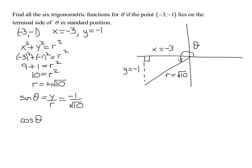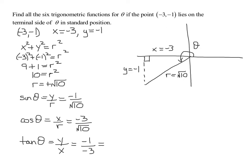Cosine of theta is x over r. X was negative 3, so it's negative 3 over the square root of 10. Tangent of theta is y over x: negative 1 over negative 3. A negative divided by a negative is positive, so tangent of theta equals 1/3. Double-check signs in quadrant 3 — tangent should be positive, sine and cosine should be negative. Things are looking good.